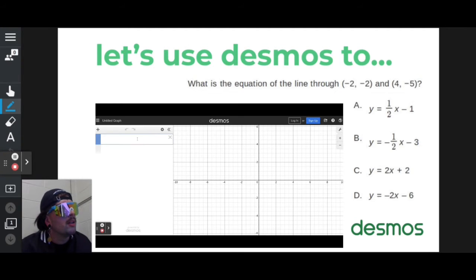So what I'm going to do first is I'm going to type in those two points, negative 2, negative 2, go down, click the next line, type in 4, negative 5.